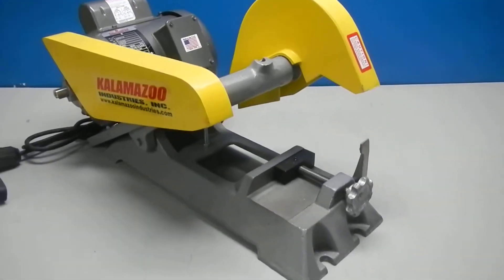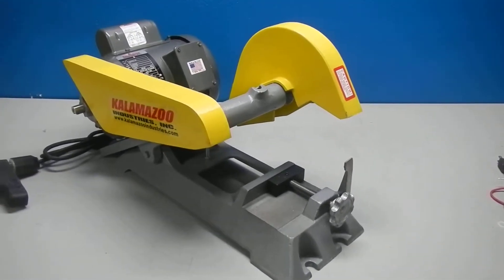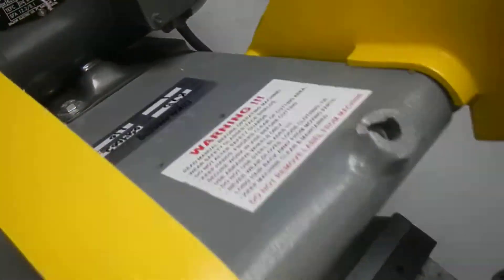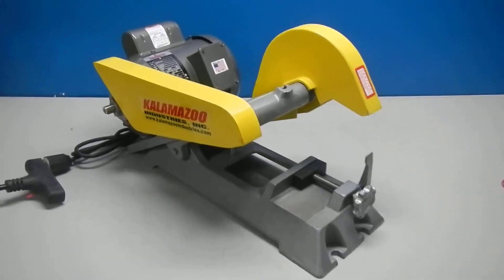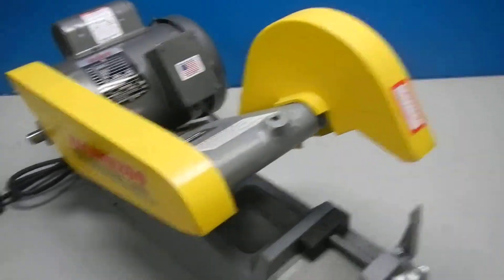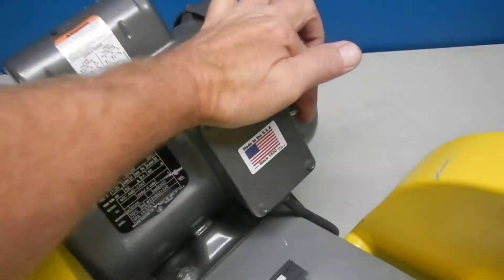Here we have a Kalamazoo K7B cutoff saw. It's one horsepower, 115 volt, and we're just going to fire it up to show you that it does operate. I'll hit the switch over here.